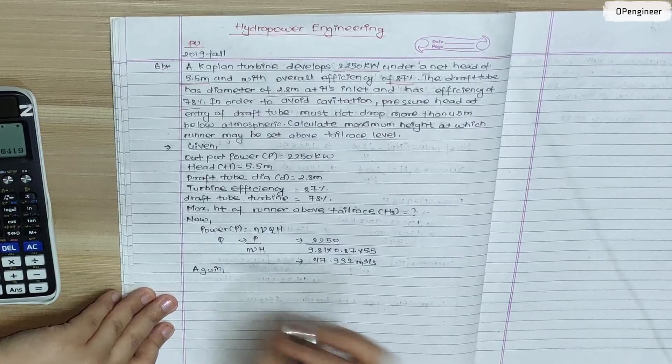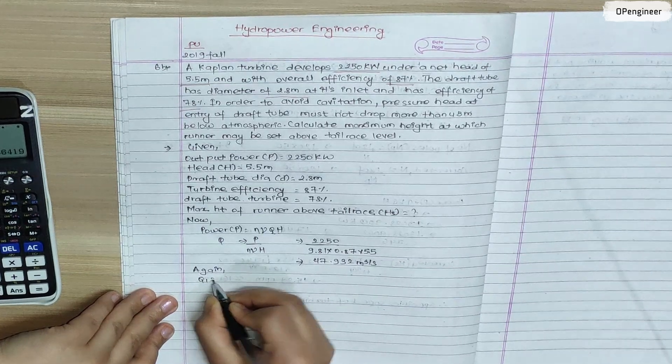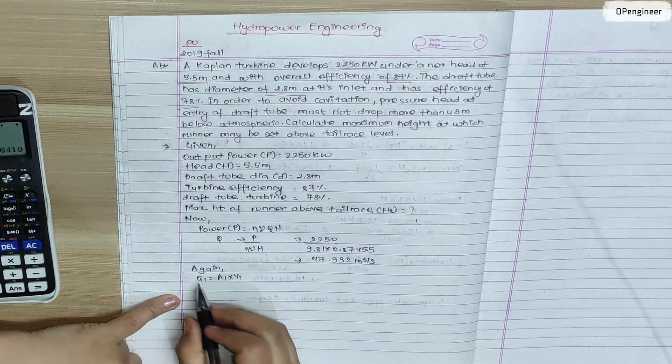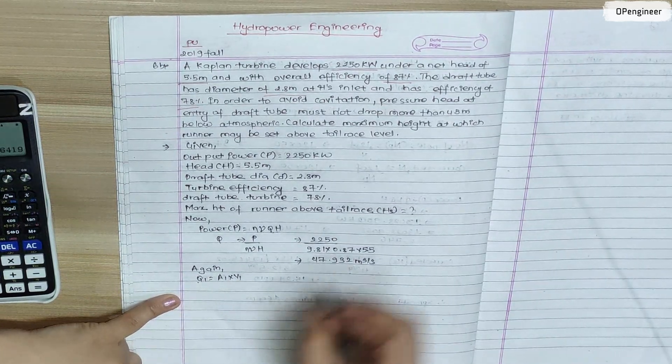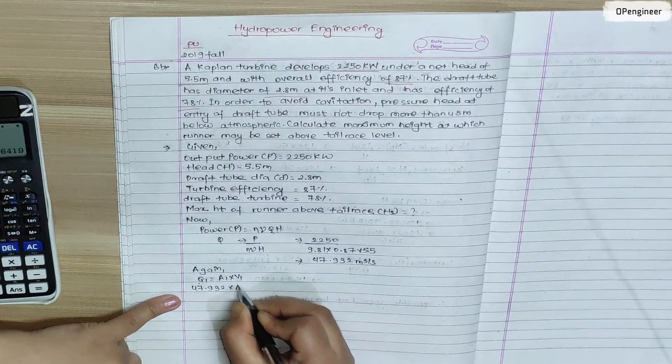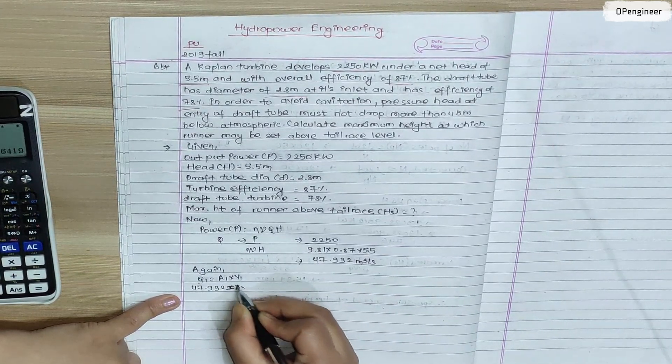Again Q1 equals to A1 into V1, this is to calculate V1. Q1 is 47.932 equals to area π D² / 4 times V1.